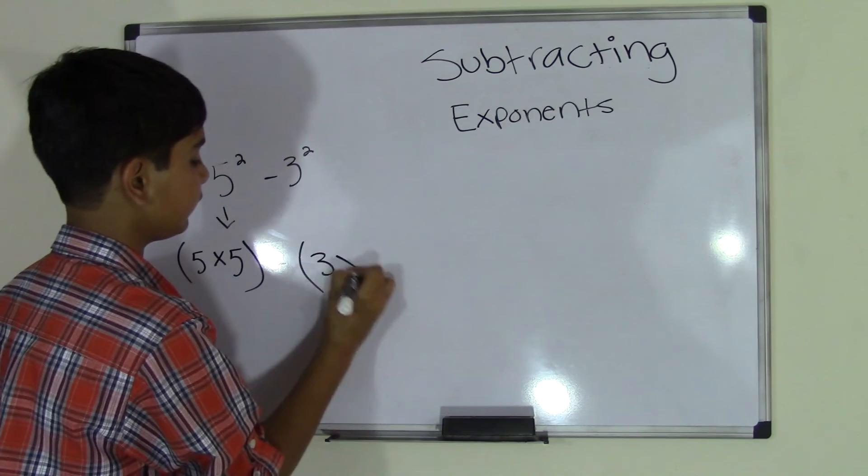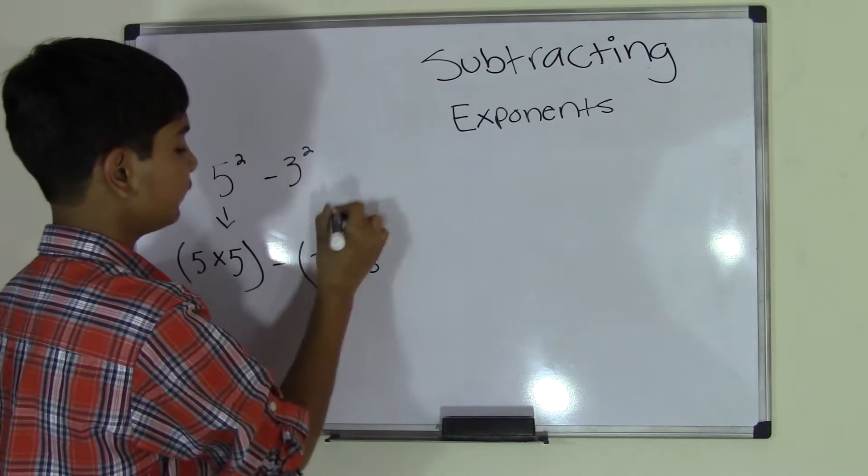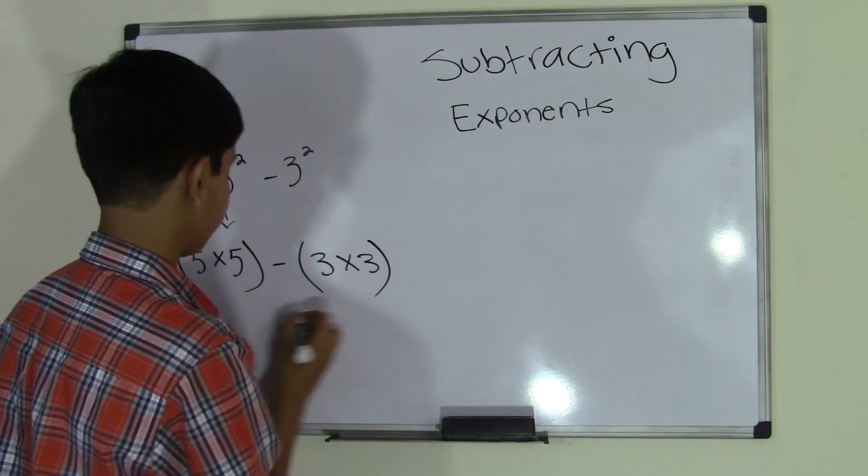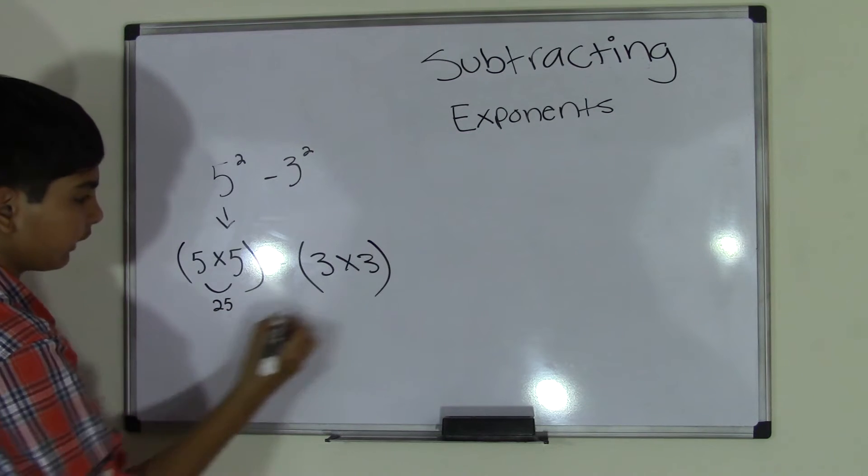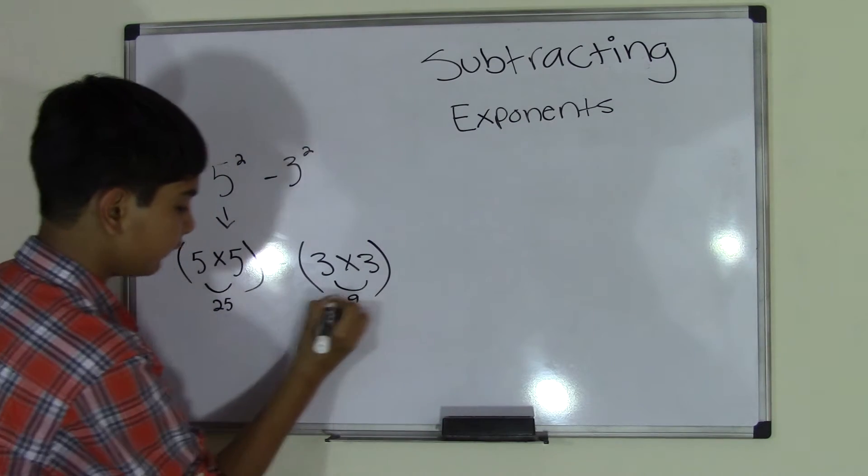For 3 to the power of 2, we write 3 times 3 because it's 3 to the power of 2. Now we go ahead and do this: 5 times 5 is 25, and 3 times 3 is 9.